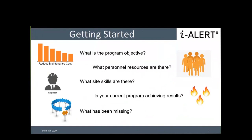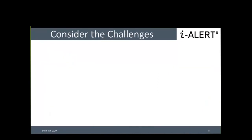That leads to: what's been missing? In your program — and most sites have some elements of a condition monitoring program — if it's just on critical equipment or maybe a walk-around event, what has been missing to prevent you from detecting these unplanned failures? You also need to think about what challenges will occur if you start to change the program you're currently running, especially if you're trying to implement new technologies.